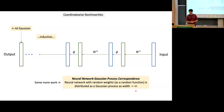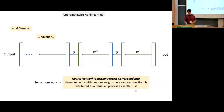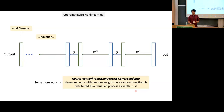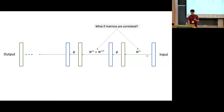This is the main sequence of reasoning to arrive at the so-called neural network Gaussian process correspondence. This is a very famous result: why neural networks with random weights, as a random function, are distributed as a Gaussian process as width goes to infinity. This is a standard result in this area where you have a very complicated function given by a neural network, but somehow when you randomly sample the weights and let the width go to infinity, the random function becomes a very well-studied object.